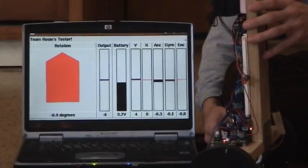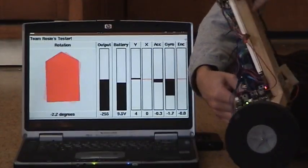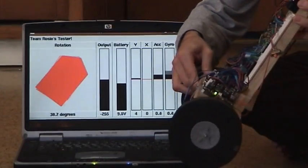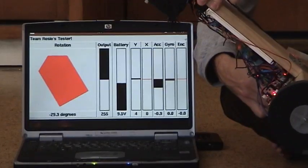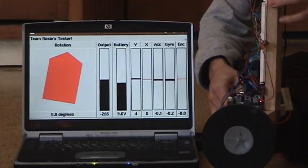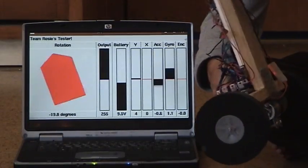We can display such values as Rosie's angle, the output power to the motors, the input value from the remote control, and the raw accelerometer and gyroscope values.